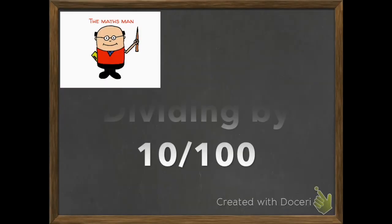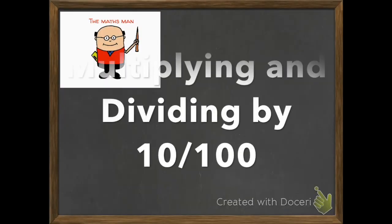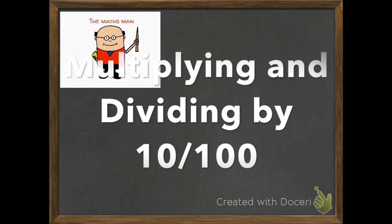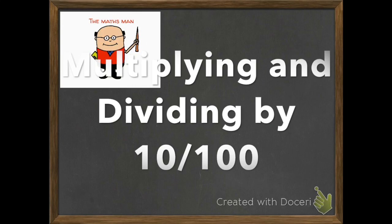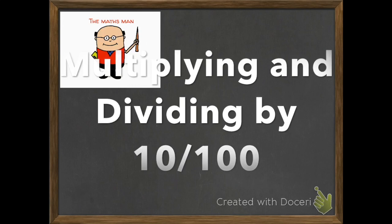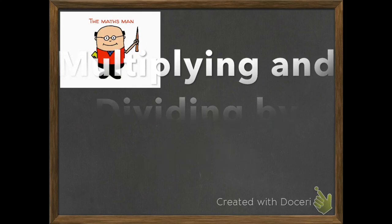Hi guys, Mathsman here back with a new video. Today I'm going to be looking at a place value objective: being able to multiply and divide mentally by 10 and 100.